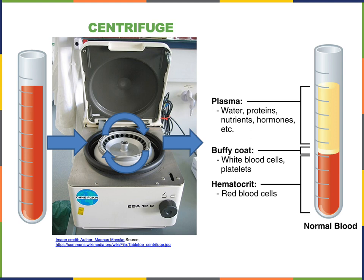On the right we can see an illustration of what a normal blood tube looks like after being separated in a centrifuge. The top component is the plasma, which is primarily water with dissolved solutes. Those solutes include electrolytes like sodium ions, chloride ions, potassium ions, phosphate and carbonate. There are also many other nutrients dissolved in the plasma, including glucose and amino acids, as well as several proteins and hormones.